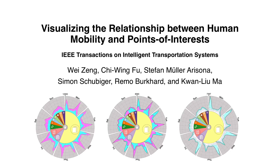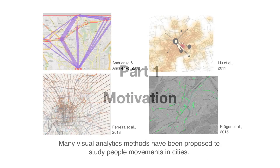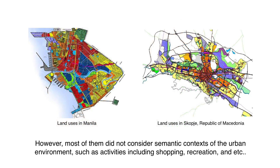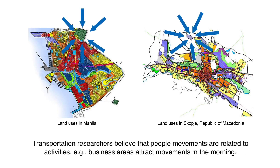Visualizing the Relationship Between Human Mobility and Points of Interests. Many visual analytics methods have been proposed to study people movements in cities. However, most of them did not consider semantic contexts of the urban environment, such as activities including shopping, recreation, and etc. Transportation researchers believe that people movements are related to activities, e.g., business areas attract movements in the morning.